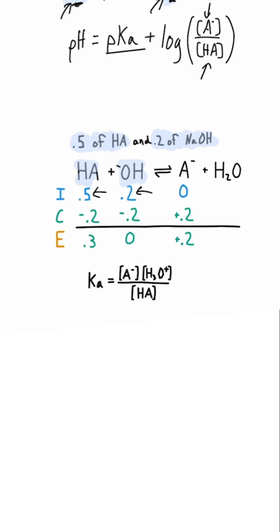So if you add 0.2, you're going to react with 0.2 moles of that weak acid. What that does is it creates a significant amount of that conjugate base. So now we have a weak acid and its conjugate base.